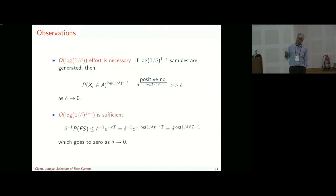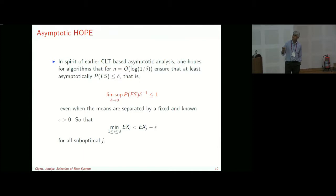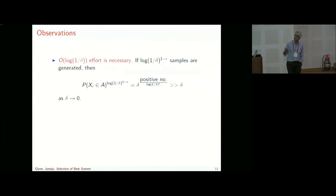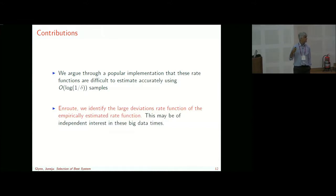Our contribution: through a popular implementation, we'll argue that large deviation rate functions are difficult to estimate accurately using order log(1/delta) samples — in fact we'll show it cannot be done. We'll identify the large deviation rate function of the empirically estimated large deviation rate function. Our key negative result is that given any epsilon-delta algorithm — means separated by epsilon, probability of false selection within delta — for populations that are mutually absolutely continuous with unbounded support and finite mean, the expected number of samples cannot be order log(1/delta).